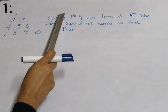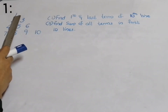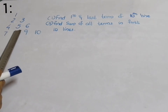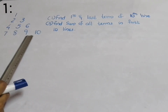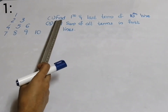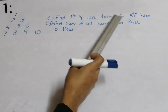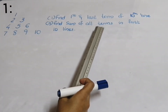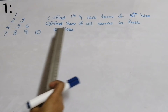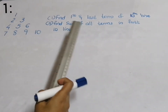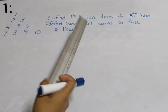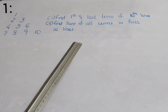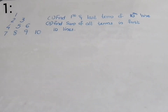Here we have the question: the number pattern is given as 1, 2, 3, 4, 5, 6, 7, 8, 9, 10. The question is to find the first and the last term of the 10th line, and also to find the sum of all terms in the first 10 lines. First, let us write down how many terms are there in each line.